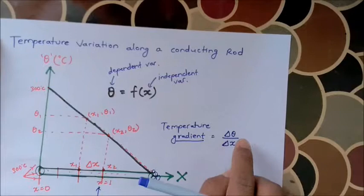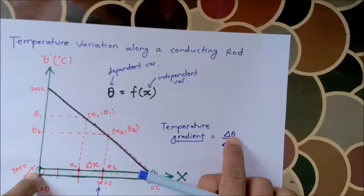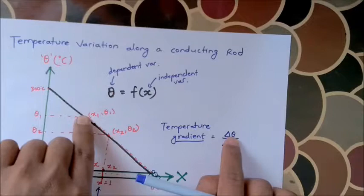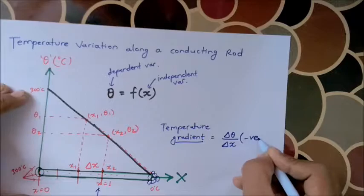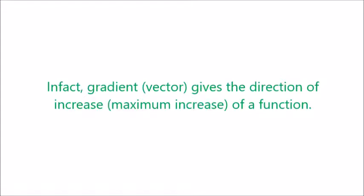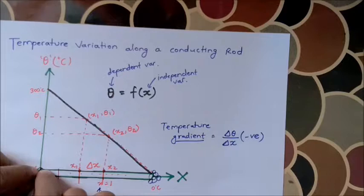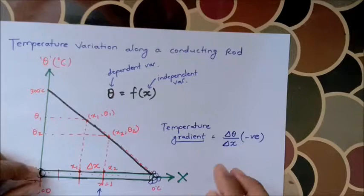Moving toward the final temperature, it will reduce, which means the initial temperature is low and we look at the hot region and the cold region. The difference across delta x is that the final temperature is low and the initial temperature is high, so delta theta is negative — giving a negative gradient. In the case of heated conductors, using the hot region and cold region, the gradient is negative.